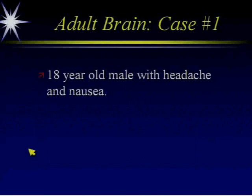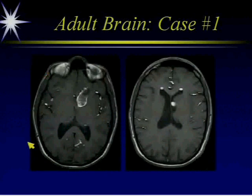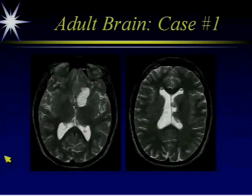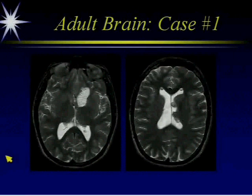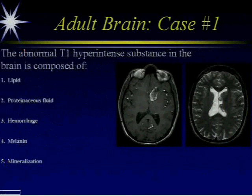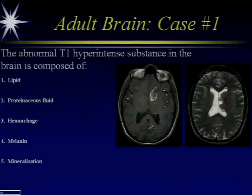A patient presents with headache and nausea. Here are your first couple of images and some additional images. The first question is: what is the abnormal T1 hyperintense substance in the brain? Is it one: lipid, two: proteinaceous fluid, three: hemorrhage, four: melanin, or five: mineralization?